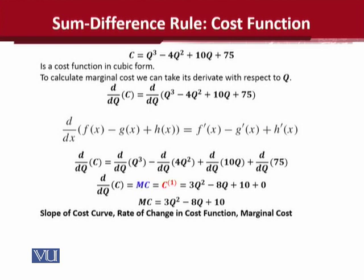In this video, we basically want to understand the economic example. On the left-hand side, you have a note in blue color where MC appears. MC is the marginal cost — differentiation gives us marginal functions. The notation c with a superscript in parentheses shows which derivative is calculated: writing 1 means the first derivative, writing 2 means the second derivative. These are different ways in which you can write this derivative.